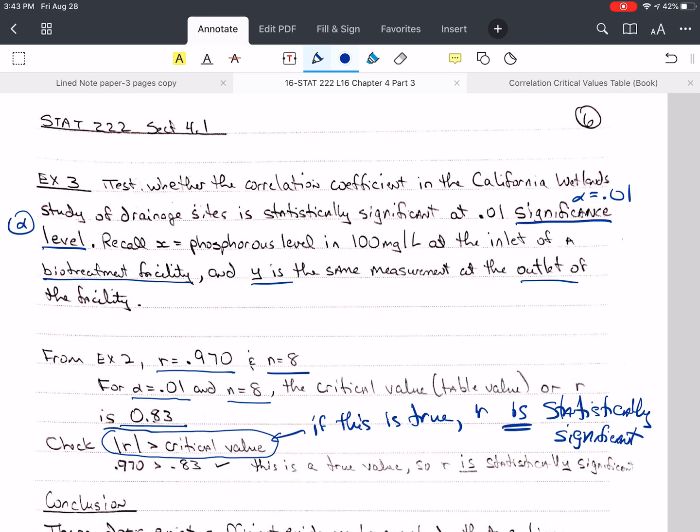And the absolute value of already positive 0.970 is still 0.970. And you'll notice that I simply, let me clean this up a little bit, that I simply plugged in for the absolute value of R. That's 0.97. And then I plugged in the critical value that I got in the table. And in between is this greater than sign. And so I copied that down. And now I look to see if this statement here on the bottom, I have to clean it up so we can see it, is that true? And yes, this statement is true. 0.97 is bigger than 0.83.